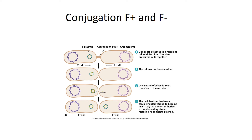This TinyTeach is going to cover conjugation, one of the three methods of genetic recombination in bacteria. Conjugation is the transfer of genetic material through direct cell-to-cell contact between bacteria.